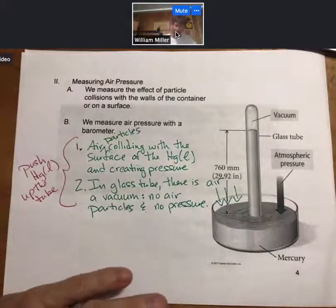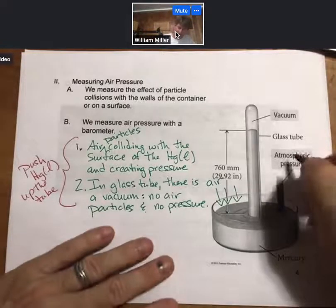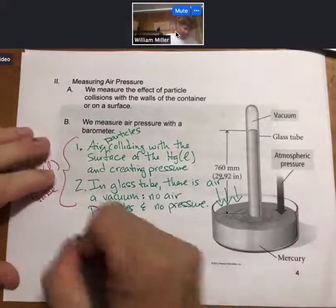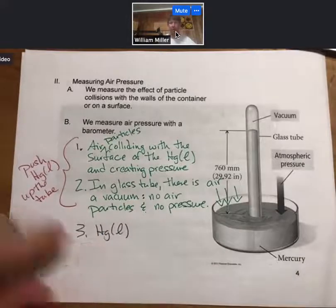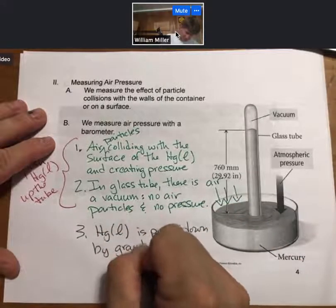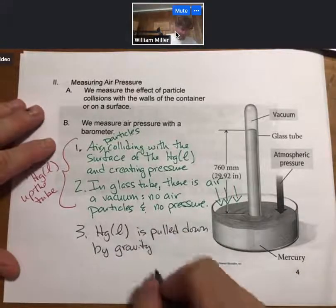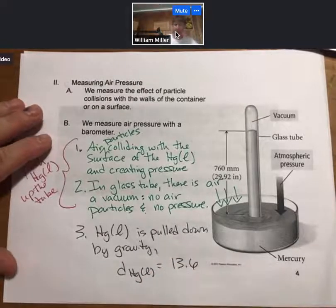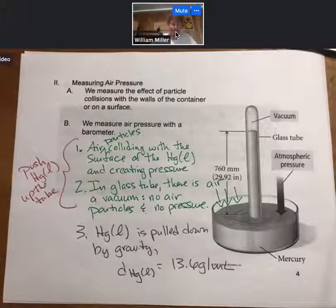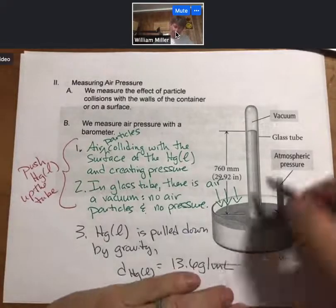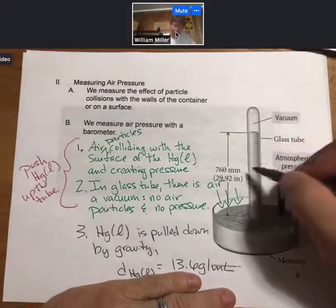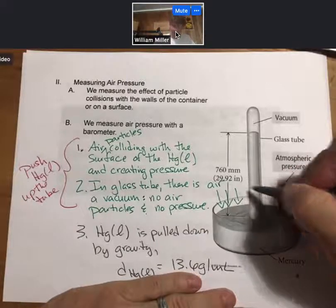You might ask, why isn't the tube completely full? We also have atmospheric pressure pushing up, but the mercury is pulled down by gravity. The liquid mercury is pulled down by gravity, and it's pulled down pretty hard because the density of liquid mercury is 13.6 grams per milliliter, 13.6 times more than water. Gravity acts strongly on the mercury. But even so, the air pressure is able to push the mercury up the tube and against gravity for 760 millimeters or 29.92 inches.